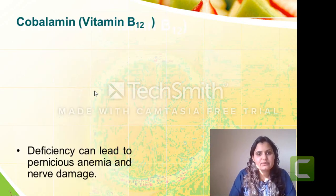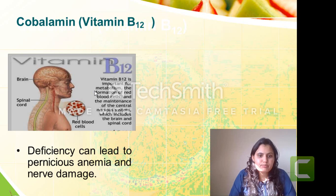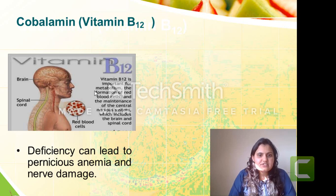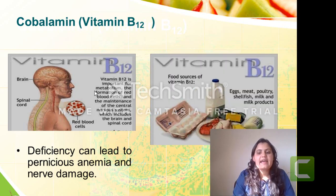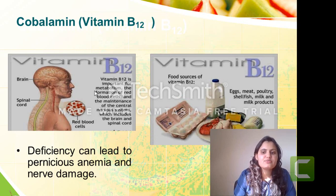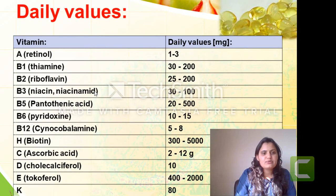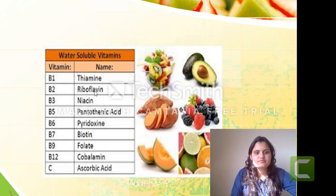The last vitamin is vitamin B12, another name is cobalamin or cyanocobalamin. Vitamin B12 is important for metabolism, formation of red blood cells, and maintenance of the central nervous system and spinal cord. If there is deficiency of vitamin B12, it will lead to pernicious anemia and nerve damage. Its absorption requires intrinsic factor. Sources are eggs, meat, poultry, shellfish, and milk. The daily requirement for various vitamins can be seen on the projector.